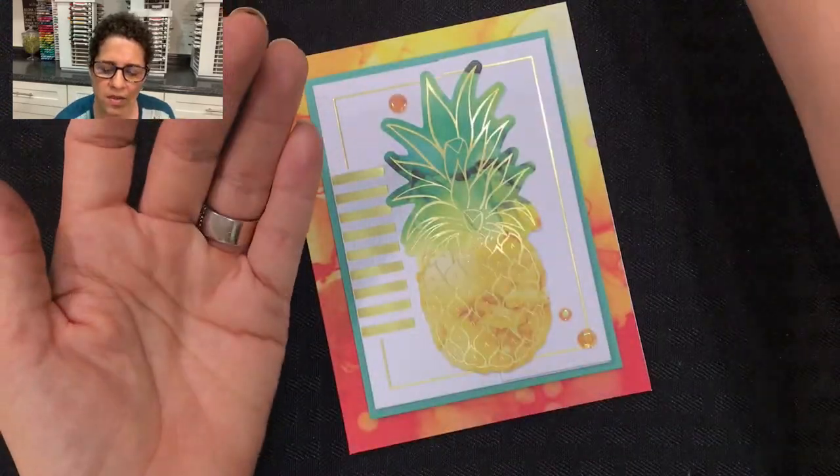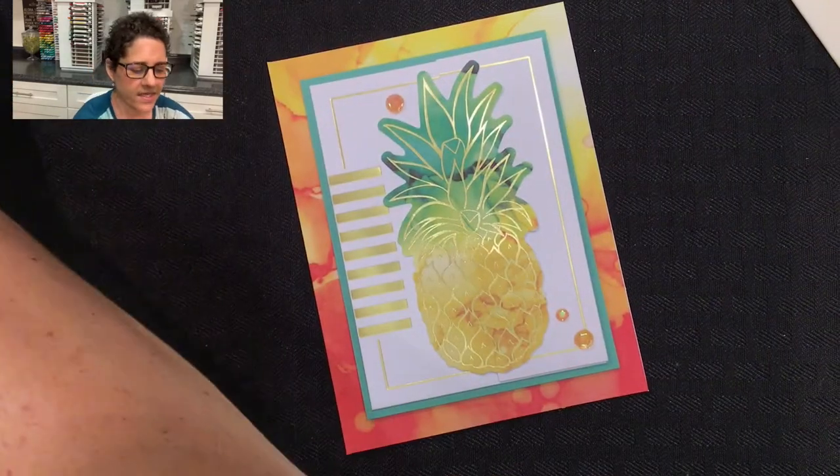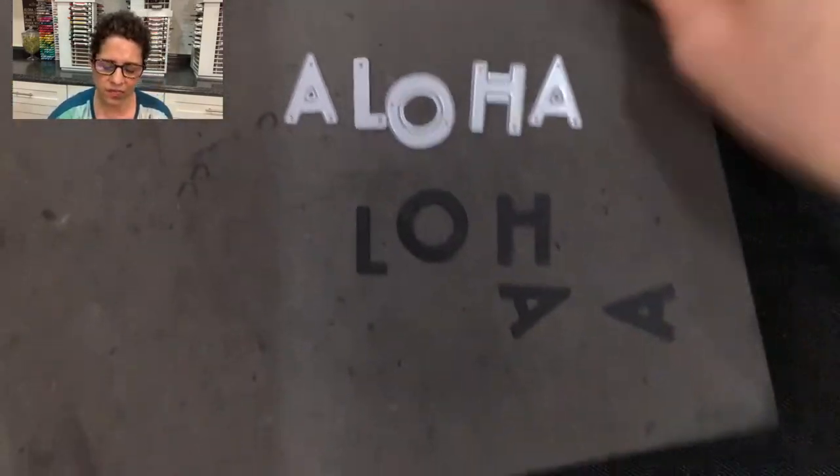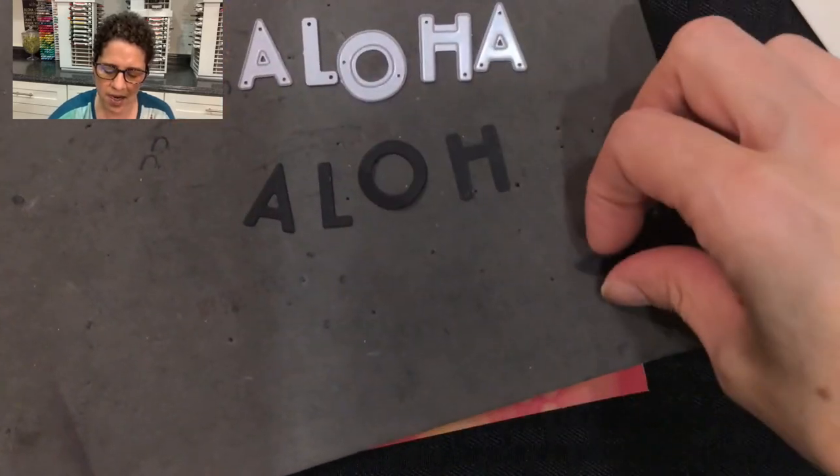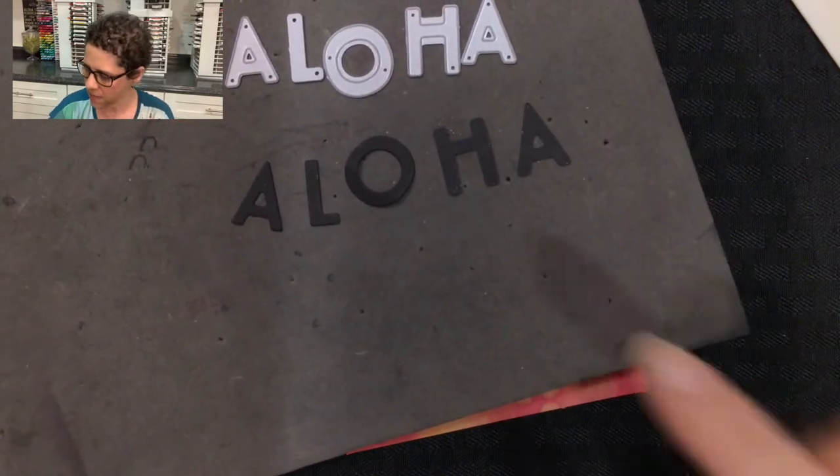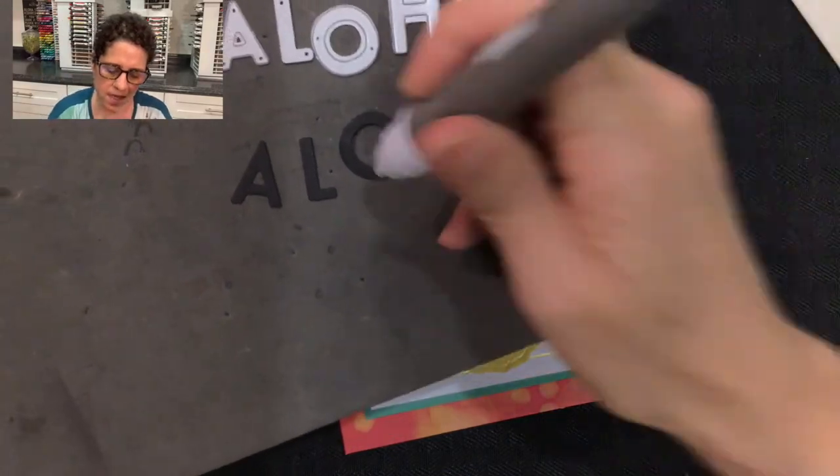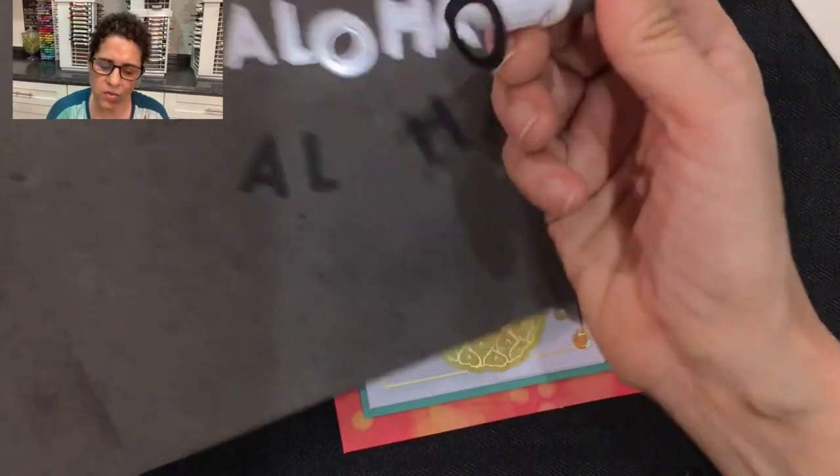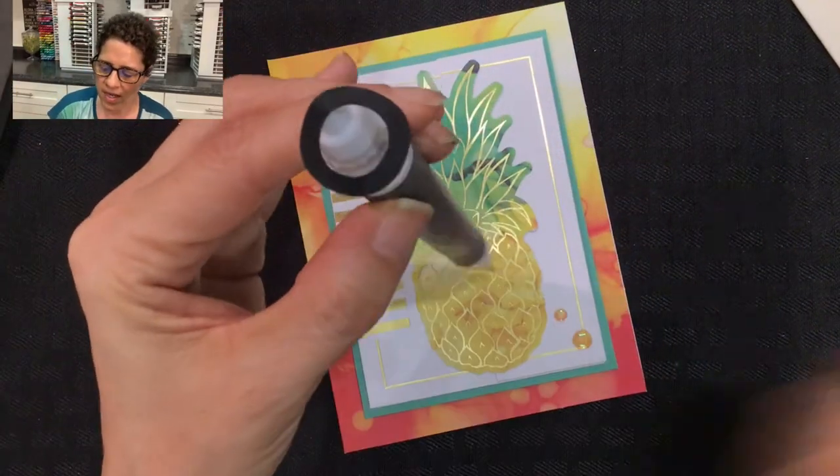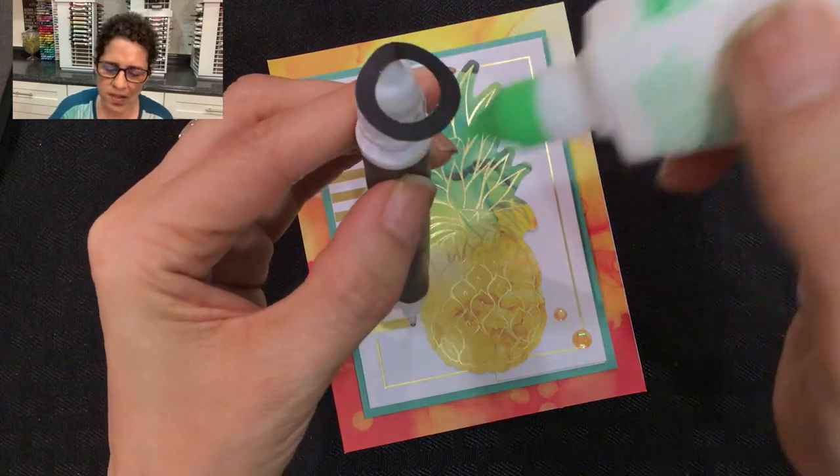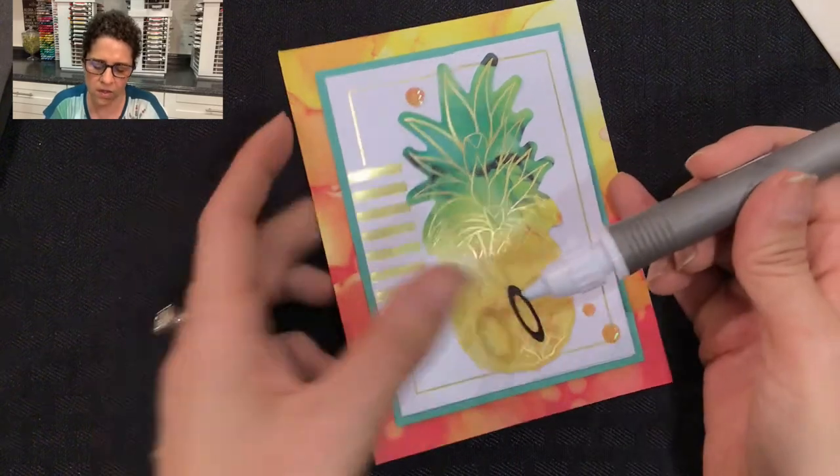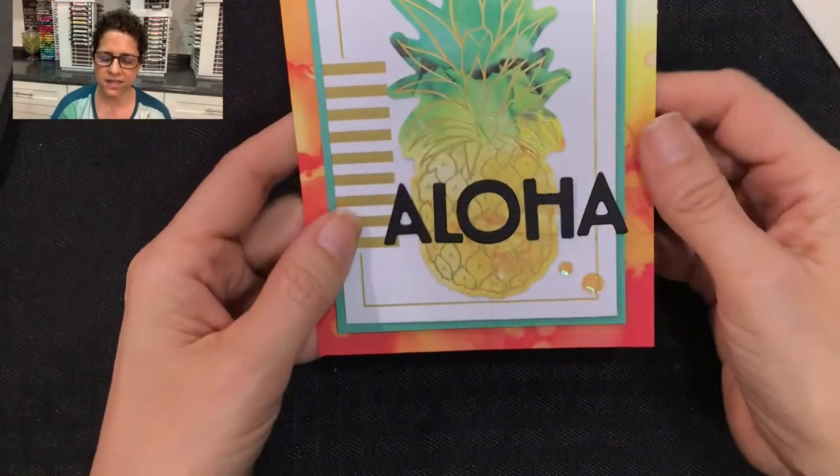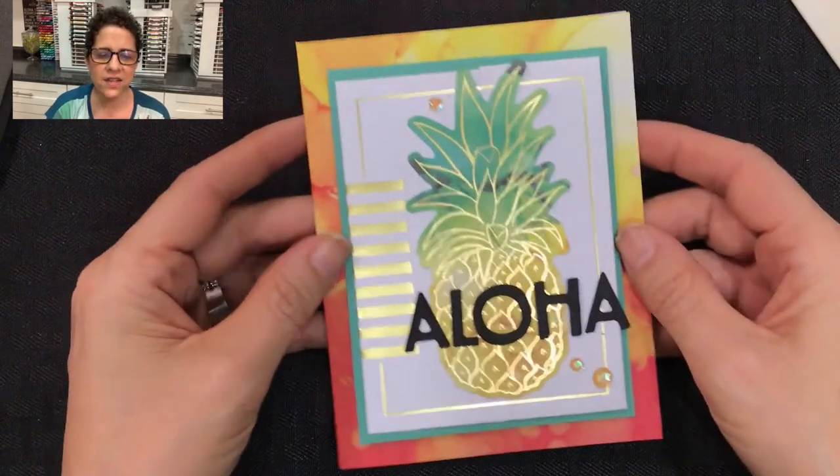Then I just pick them up with my Take Your Pick tool and flip them over. Then I added my adhesive to the back. Once the adhesive was on there I pressed it onto the card where I wanted it to go. When it was all finished the card looked like this. This is our fun aloha pineapple card number two.